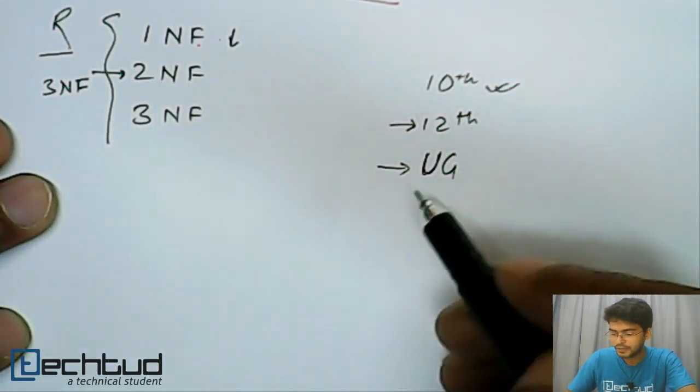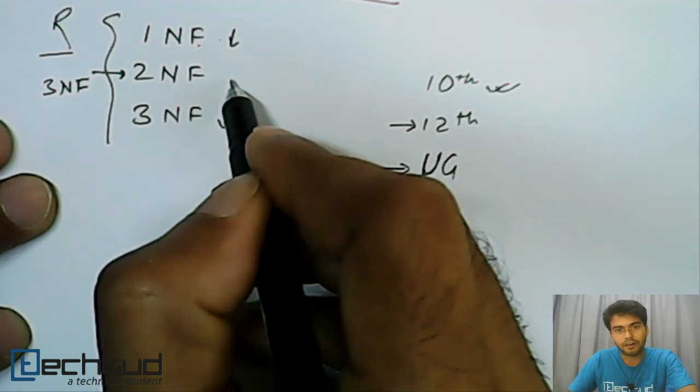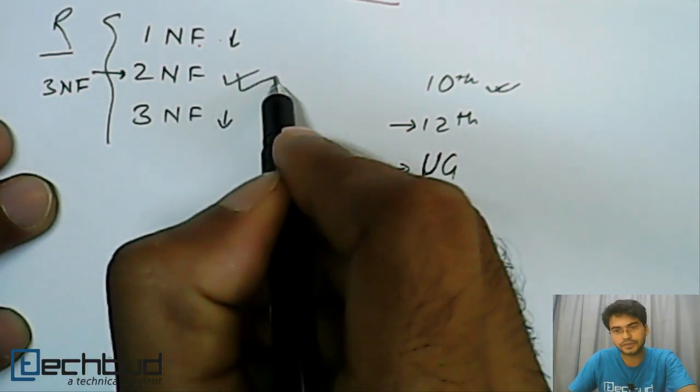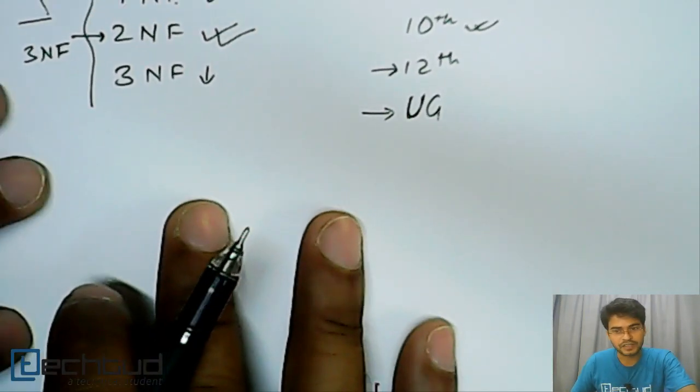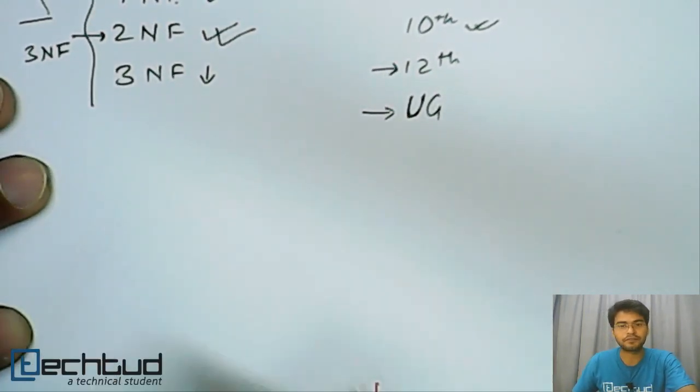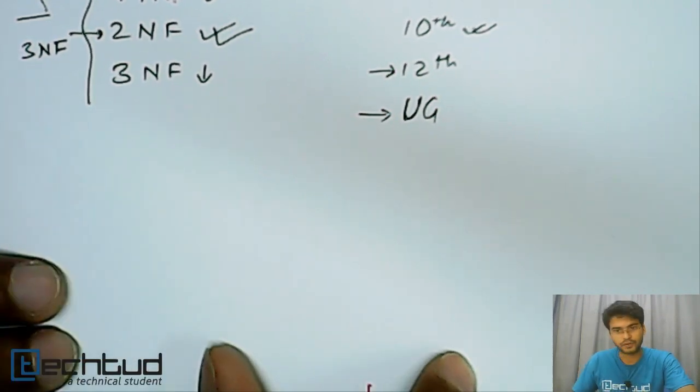Similarly, to be in third normal form, the criteria of second normal form has to be satisfied first. So likewise, we will apply certain checks on a relation and we will find out what is the highest normal form a relation possesses.